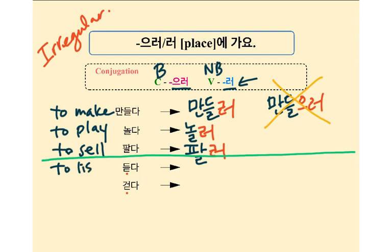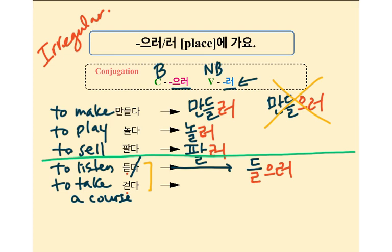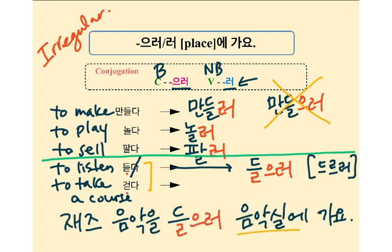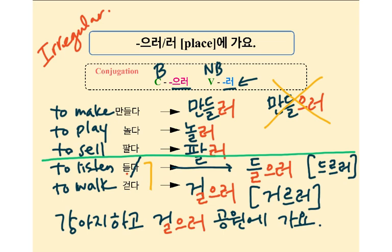듣다 means 'to listen' or 'to take a course.' 걷다 means 'to walk.' They are ㄷ irregular verbs. Take out 다 and change ㄷ to ㄹ, then add 으러. 들으러. 재즈 음악을 들으러 음악실에 가요. 걷다 — change ㄷ to ㄹ, so 걸으러. 강아지하고 걸으러 공원에 가요. I go to the park to walk with my puppy.